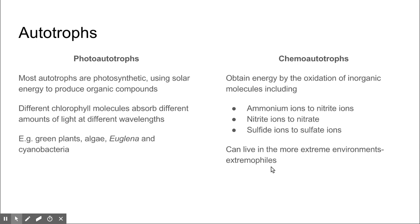Chemoautotrophs obtain their energy by the oxidation of inorganic molecules, including ammonia, nitrate, and sulfate. By breaking these down into other ions, it allows them to fix carbon. These kinds of organisms live in more extreme environments, and they're what we previously referred to as extremophiles.